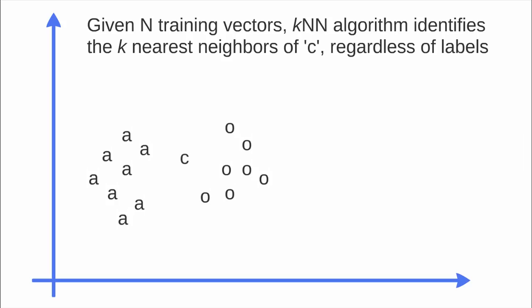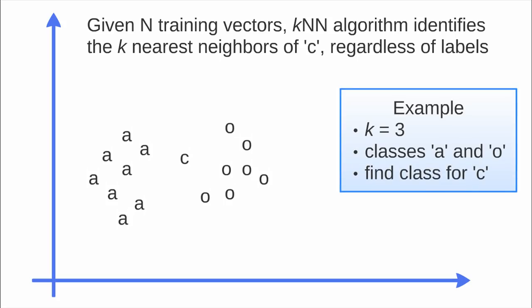C is another feature vector that we want to estimate its class. The algorithm identifies the nearest neighbors regardless of labels. In this example we have K equals 3, classes A and O, and the aim is to find the class for C.